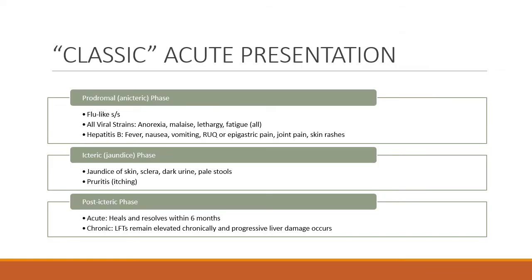The classic acute presentation of hepatitis can occur regardless of the strain — A, B, C, or E. There are three phases. The first is called the prodromal or anicteric phase, and anicteric means without jaundice, so we don't see jaundice in that first phase. The person will experience flu-like signs and symptoms. All viral strains, regardless of whether it's A, E, B, or C, will experience anorexia, malaise, lethargy, and fatigue — those general flu-like signs and symptoms.